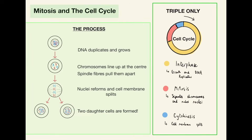Mitosis and the cell cycle. If you're doing triple science, it's good to have a rough idea of the phases: interphase, mitosis and cytokinesis. For those doing combined science, we just need to know the process of mitosis. First, the DNA duplicates and grows. The chromosomes line up in the centre and fibres pull them apart to each side of the cell. Once there, the nuclei reform and the cell membrane splits, creating two daughter cells. Daughter cells are identical to the parent cell.